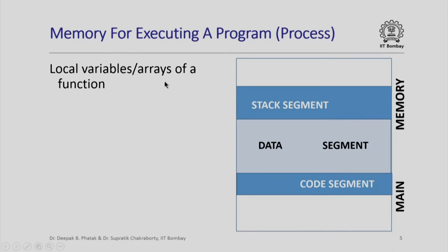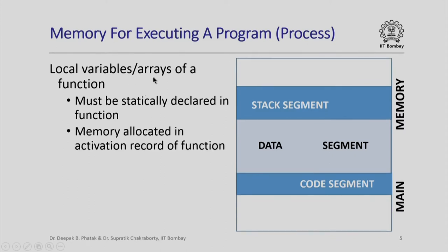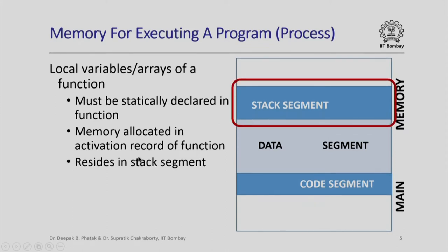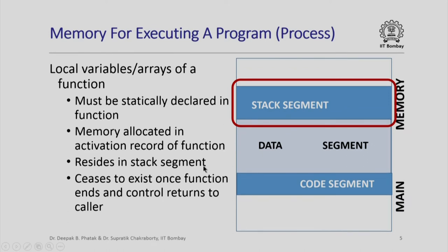When you look at the local variables or local arrays of a function, they are statically declared in the body of the function. We have to declare all the local variables and arrays that we want to use in a function. As a result, the memory for each of these variables and arrays is basically allocated in the activation record of the function when the function is called. Since the activation record gets pushed into the call stack and the call stack resides in the stack segment, all of this memory allocated for local variables and arrays really resides in the stack segment. Once the function ends and control returns to the caller, the entire activation record is freed, so all of these local variables and arrays also cease to exist.